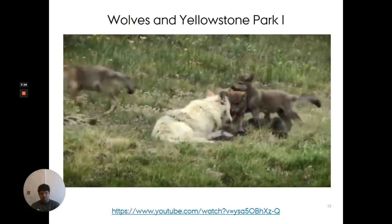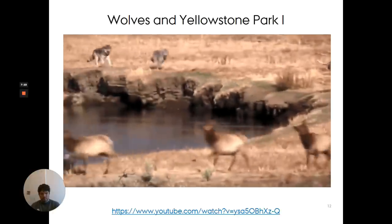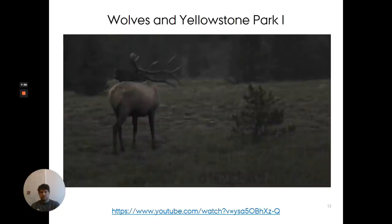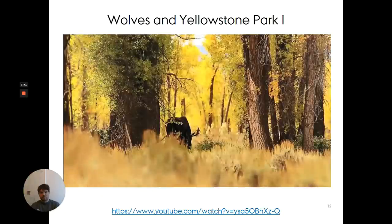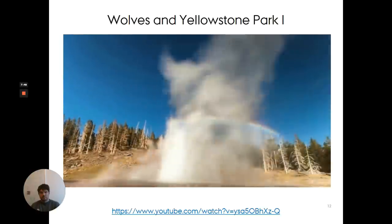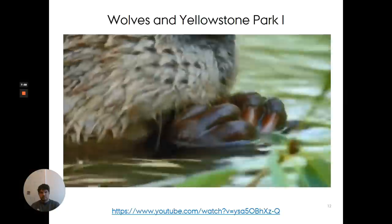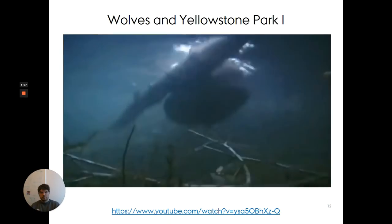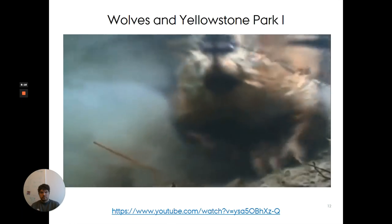As soon as the wolves arrived, even though they were few in number, they started to have the most remarkable effects. First, of course, they killed some of the deer, but that wasn't the major thing. Much more significantly, they radically changed the behavior of the deer. The deer started avoiding certain parts of the park, particularly the valleys and the gorges. And immediately those places started to regenerate. In some areas, the height of the trees quintupled in just six years. Bare valley sides quickly became forests of aspen and willow and cottonwood. As soon as that happened, the birds started moving in. The number of beavers started to increase because beavers like to eat the trees. And beavers, like wolves, are ecosystem engineers. The dams they built provided habitats for otters, muskrats, ducks, fish, reptiles and amphibians.